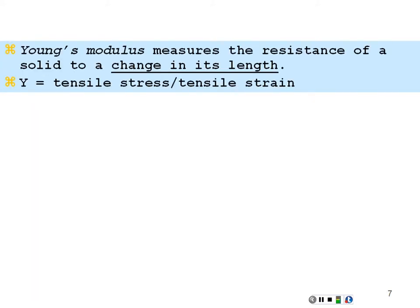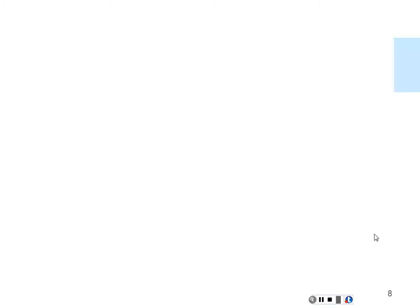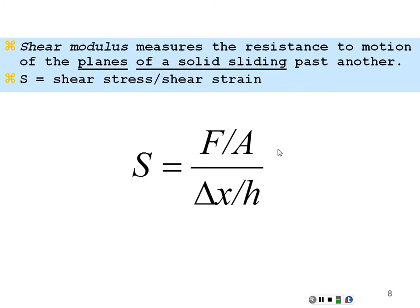For Young's modulus, we measure the resistance of a solid to a change in its length. It is the tensile stress over the tensile strain. Given a one-dimensional object like this meter stick, Young's modulus is the force per cross-sectional area applied along its length, divided by the change in length relative to its original length — stress over strain, cause over effect. The shear modulus measures the resistance of a solid to sliding past itself. It is the shear stress over the shear strain — force per area over delta X divided by the distance between the two forces of the couple.